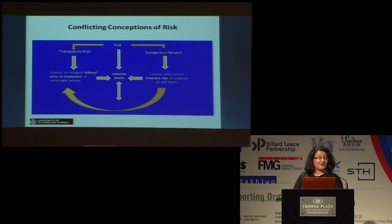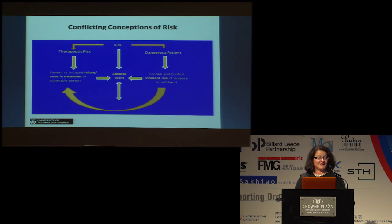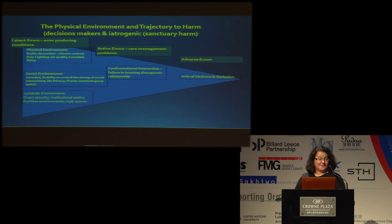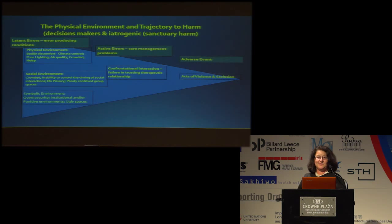Originally, you'd look at therapeutic risk and say you're trying to mitigate harm on the patient. In mental health care, it's the patient who's seen as the risk, and everything has traditionally been done to contain and incarcerate. New approaches to psychiatric care are not to do that, but to help people recover. Looking at the trajectory in a patient safety model, latent errors in the physical, social, and symbolic environment can lead to active care management problems, which lead to the adverse event — acts of violence and seclusion. In all seven cases, the primary determinant of the latent error were decisions made by management during the planning process or afterwards.